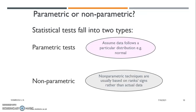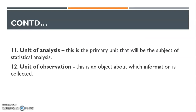That is what this diagram shows us — that statistical tests fall into two types: parametric and non-parametric. Unit of analysis is the primary unit that will be the subject of statistical analysis, whereas unit of observation is an object about which information is collected. It is possible to have a unit of analysis different from a unit of observation. For example, you can collect data on a project as your unit of observation, but analyze the individual beneficiary of that project as your unit of analysis.